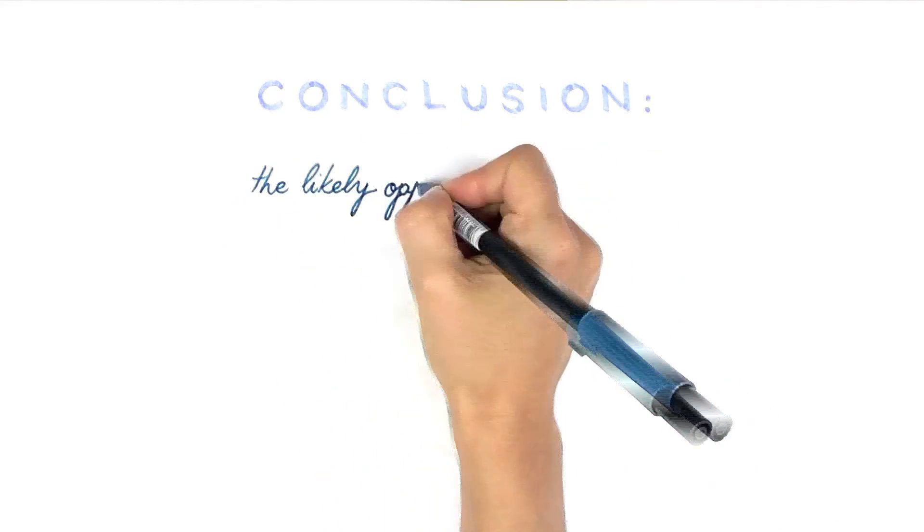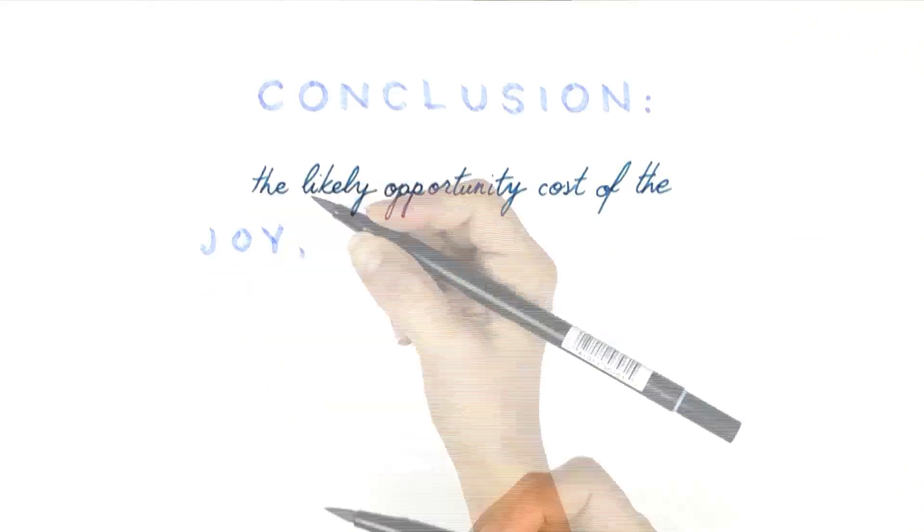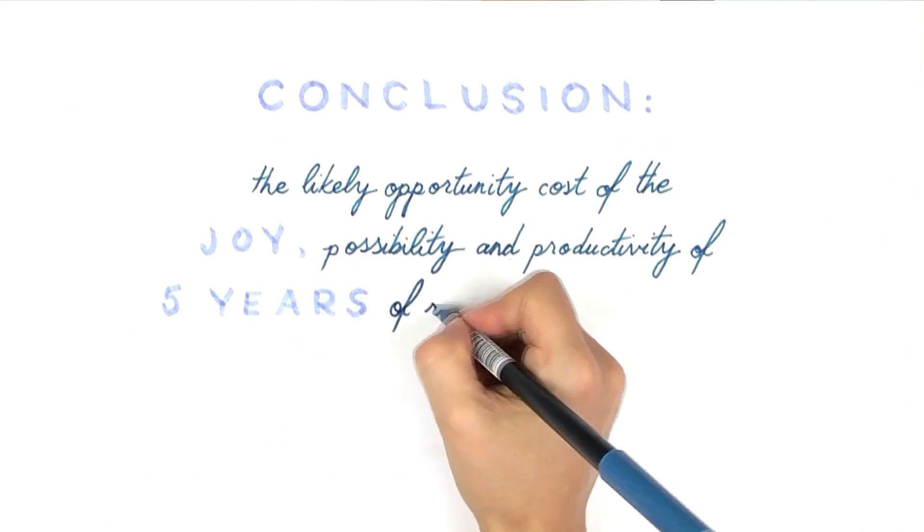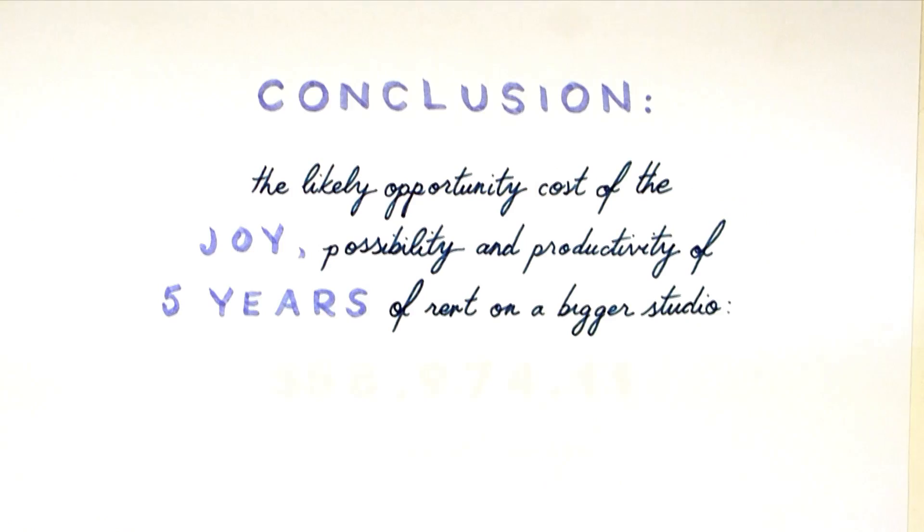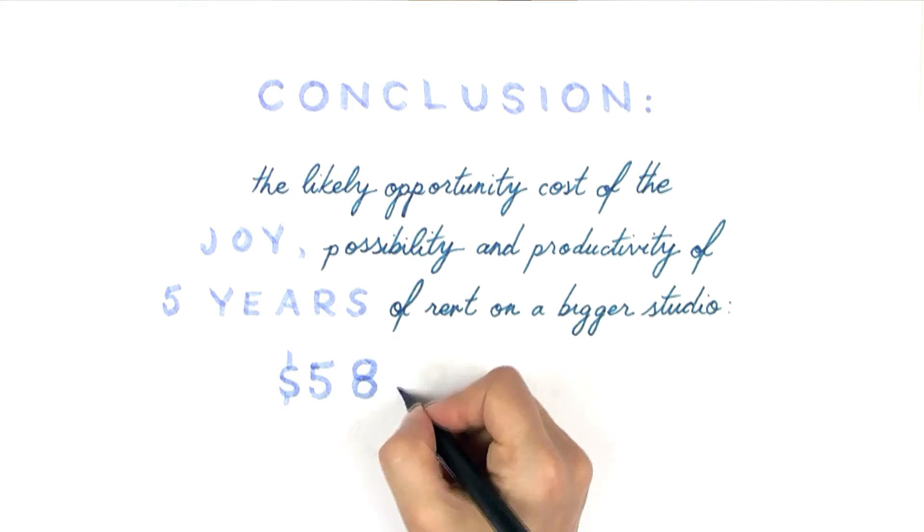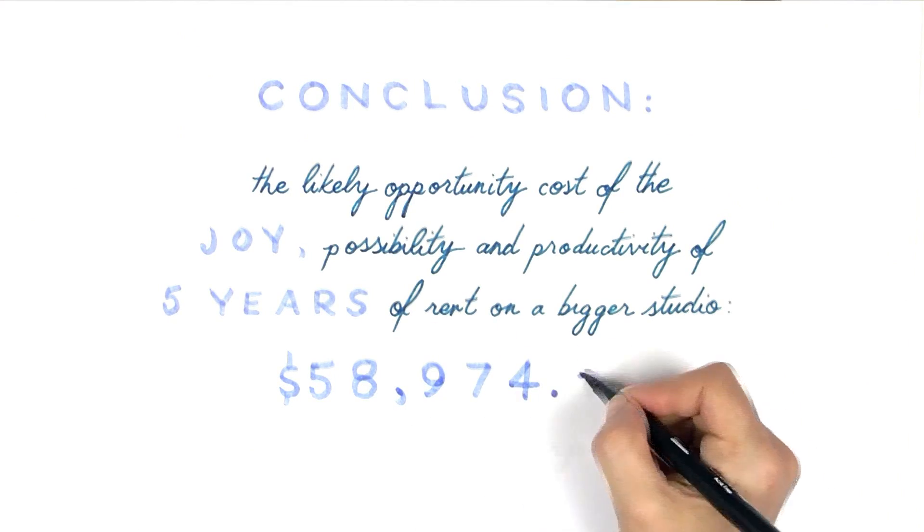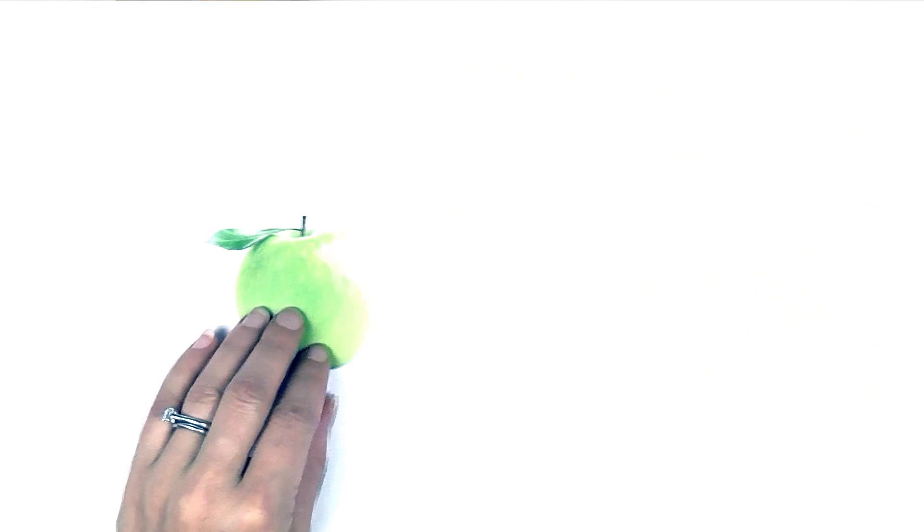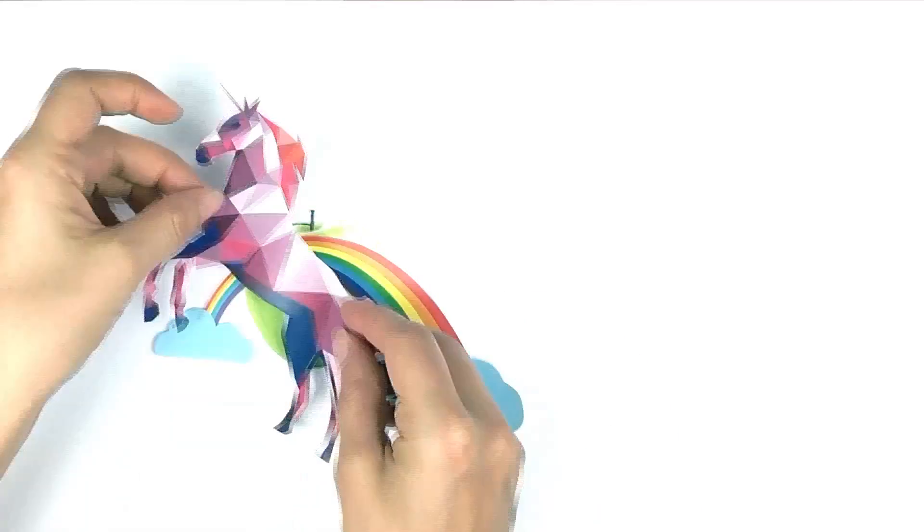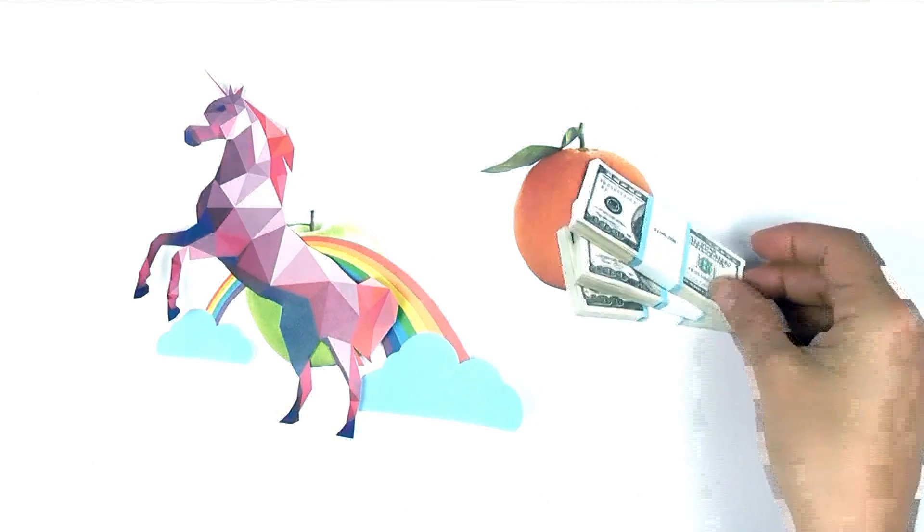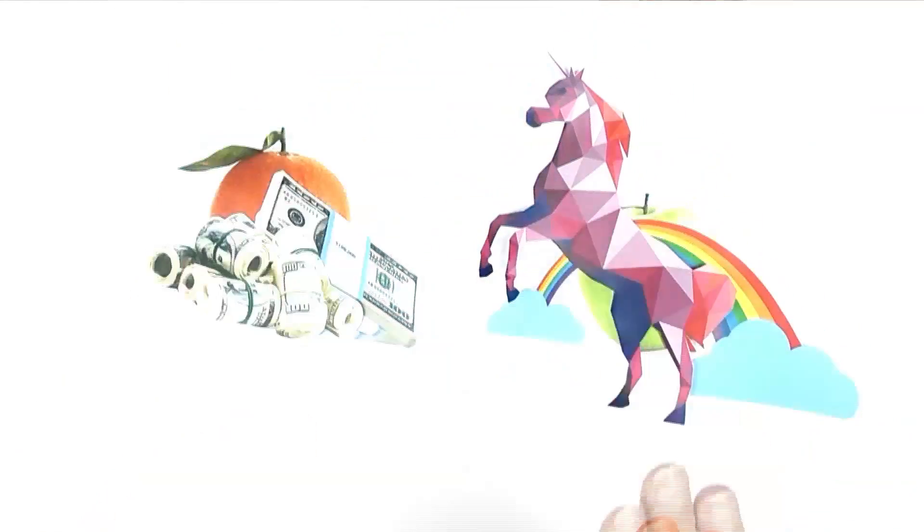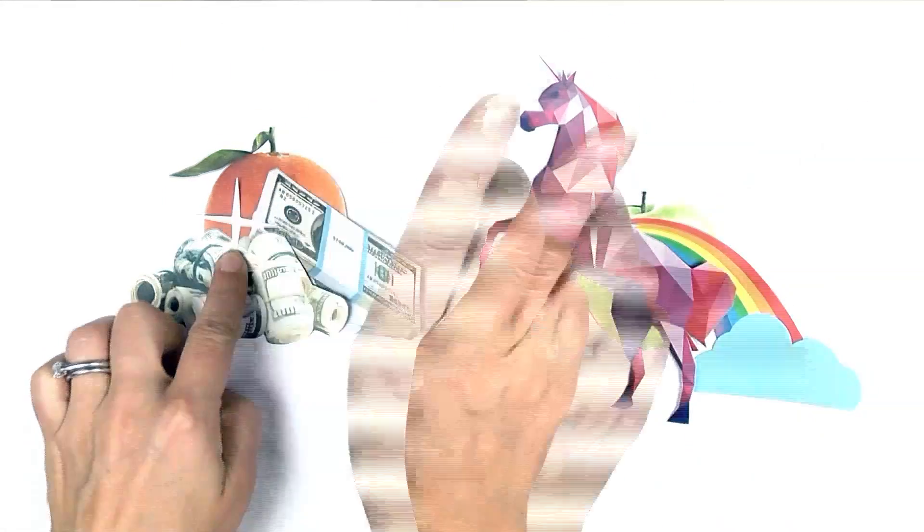So the likely opportunity cost of the joy, possibility, productivity, and magic of five years of rent on a bigger studio is $58,974.11 of retirement savings. Yes, it may still be hard to compare the apples of joy and magic to the oranges of stocks and bonds, but I found this to be the most useful way to put a price tag on something that feels immeasurable.